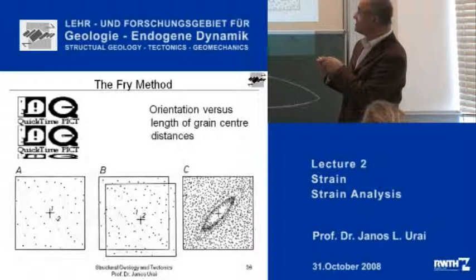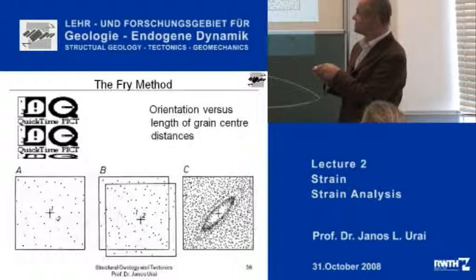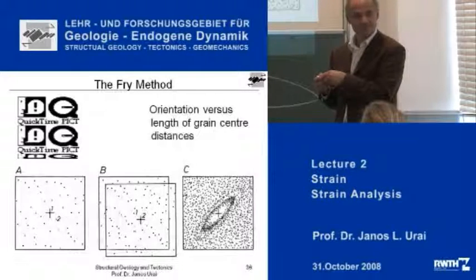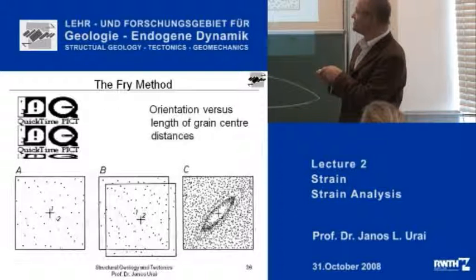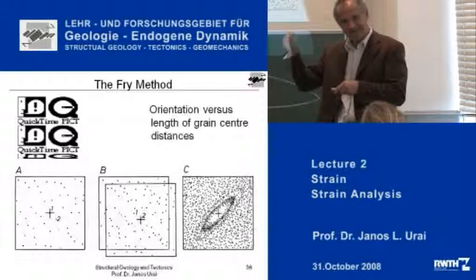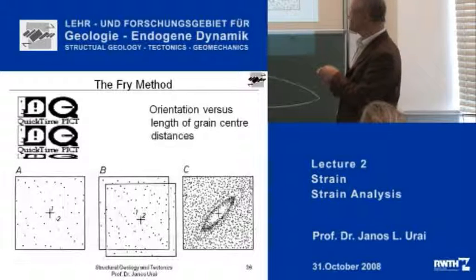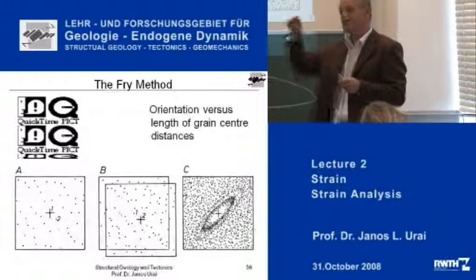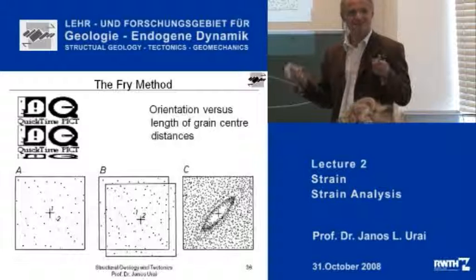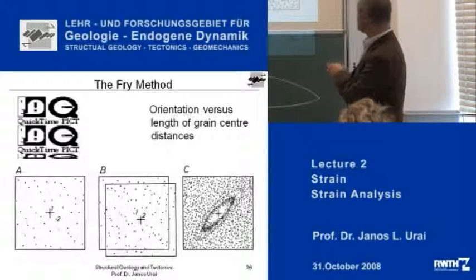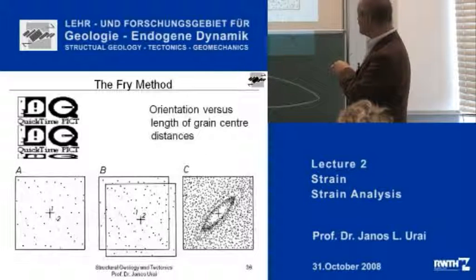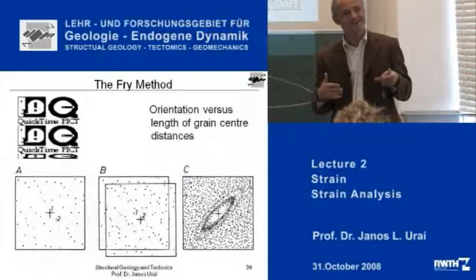What you do is you take the sand grains in a thin section, you put a transparent sheet on it, and you mark the center of each of these sand grains. Then you do this again, but you put the center of your sheet on another sand grain and mark again all the positions around it. You do it again and again — you put the center of your sheet on each of these sand grains and mark all the other ones. What you get is a cloud in which, in an elliptic middle part, there are no points.